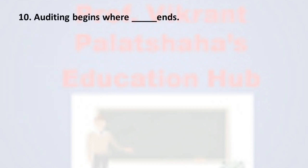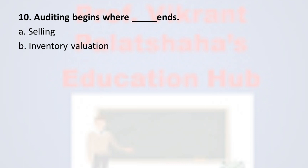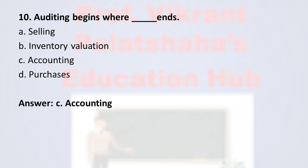Question number ten: auditing begins where — ends. Option A selling, option B inventory valuation, option C accounting, and option D purchases. The correct option is option C, accounting.